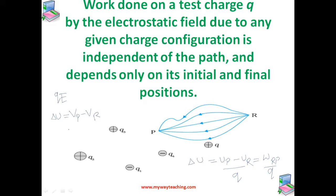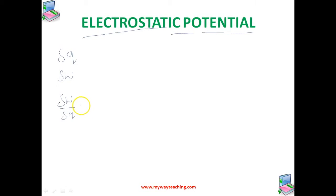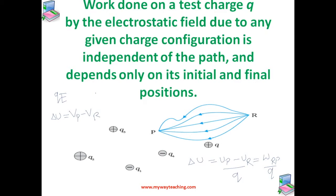To obtain the work done per unit test charge, we take an infinitely small test charge δq, obtain the work done δw in bringing it from infinity to the point, and determine work done per unit charge δw/δq. The external force at every point of the path must be equal and opposite to the electrostatic force on the test charge at that point. So electrostatic potential is the work done in bringing a unit positive charge from infinity to the point in an electrostatic field.